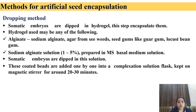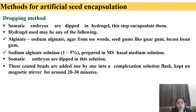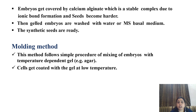Methods for artificial seed encapsulation. First is the dropping method, in which somatic embryos are encapsulated in alginate — which may be alginate, agar from seaweed, or sodium alginate solution — prepared with somatic embryos. The coated beads are then added one by one into a complex solution in a flask kept on a magnetic stirrer for around 20 to 30 minutes. The embryos get covered by calcium alginate, which is a stable complex due to ionic bond formation. The synthetic seeds then become harder. The gelled embryos are washed in water.